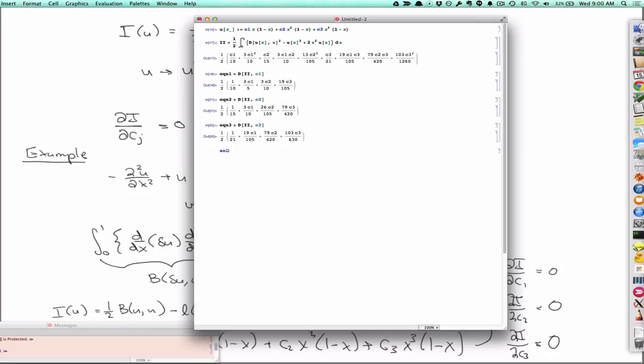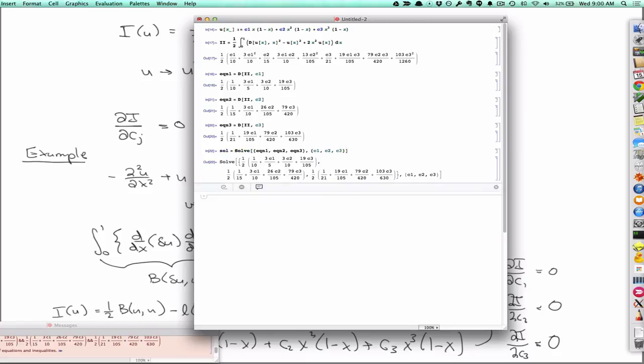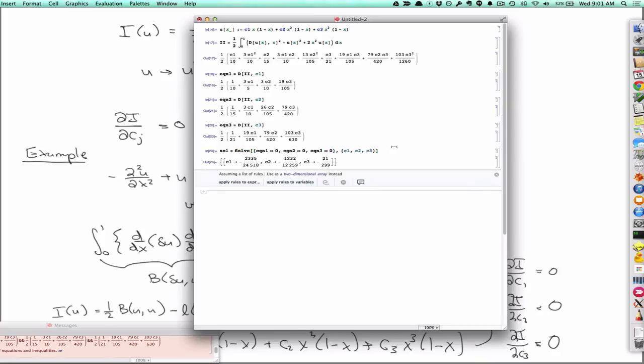So then I would have solve for c_1, c_2, c_3. I need to set these equal to zero. So there's my three solutions.